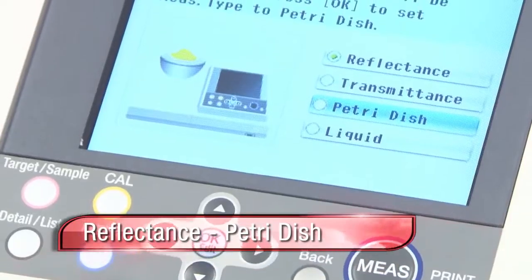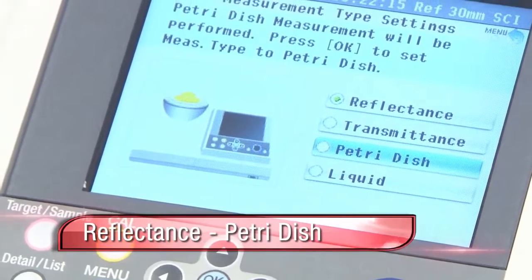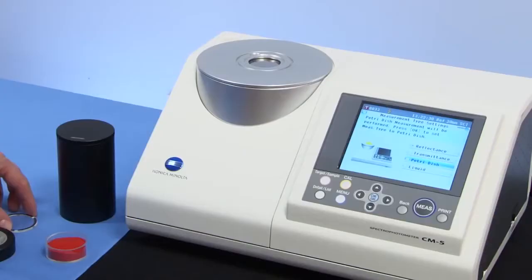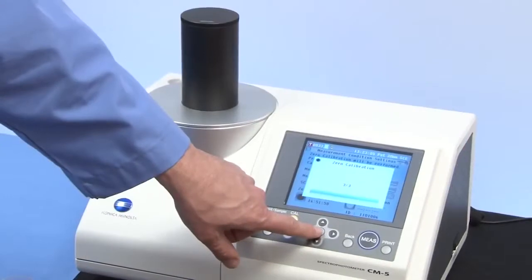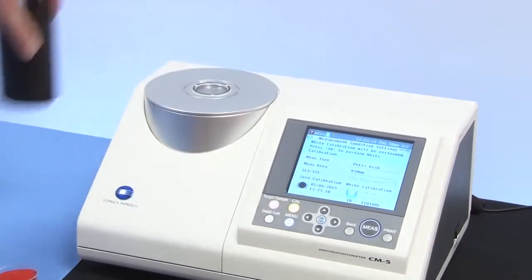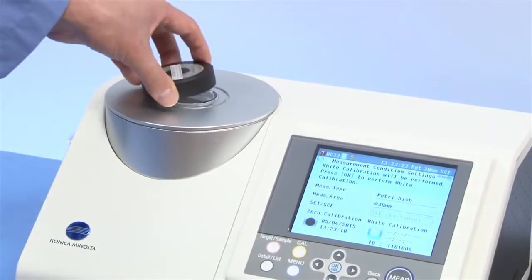To perform a reflectance measurement in petri dish mode, put the special target mask in place followed by the glass accessory piece. Perform zero calibration and then an external white calibration through the glass piece.